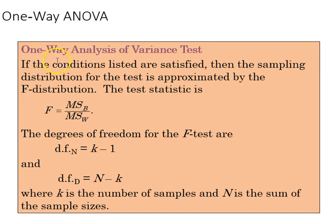If those conditions are met, then the sampling distribution is going to be the F distribution, and the test statistic this time will be the MSB over the MSW, and the degrees of freedom are going to be as they are with the F distribution.